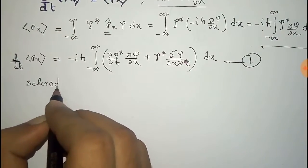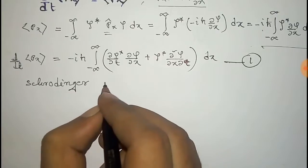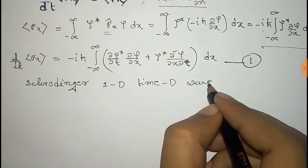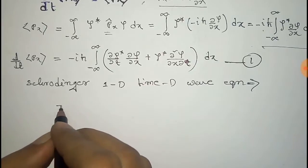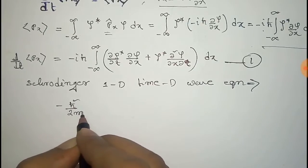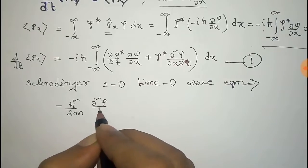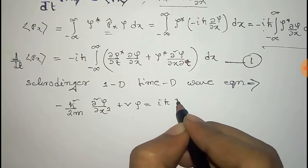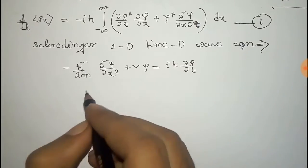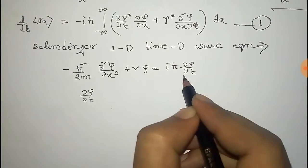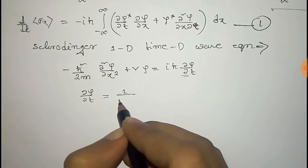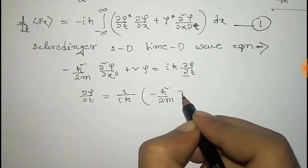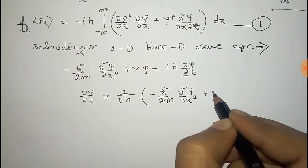From the one-dimensional time-dependent Schrödinger equation we get: −(ℏ²/2m)(∂²ψ/∂x²) + Vψ = iℏ(∂ψ/∂t). Rearranging, ∂ψ/∂t equals (1/iℏ)[−(ℏ²/2m)(∂²ψ/∂x²) + Vψ]. We call this Equation 2.